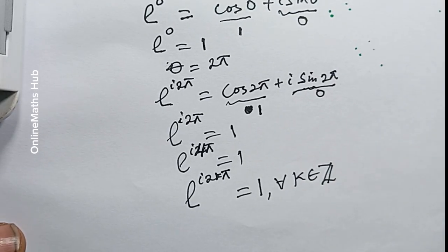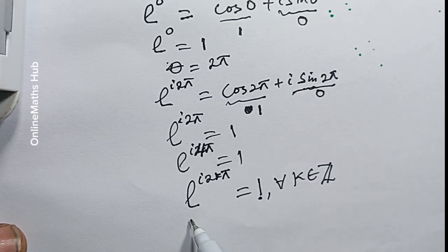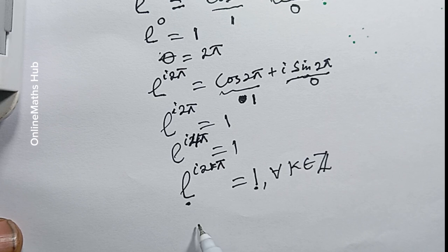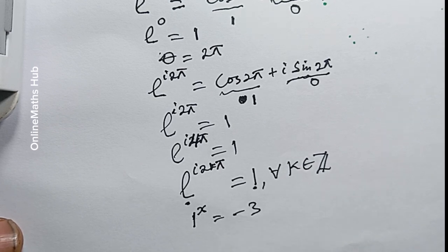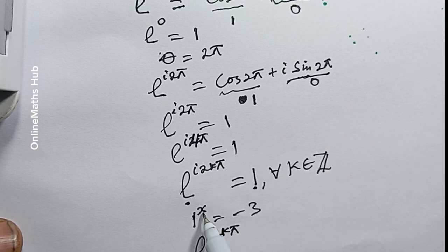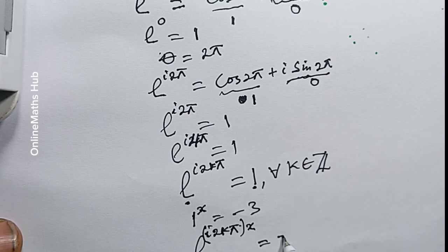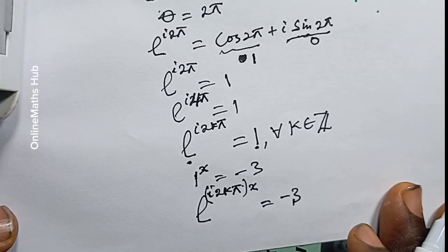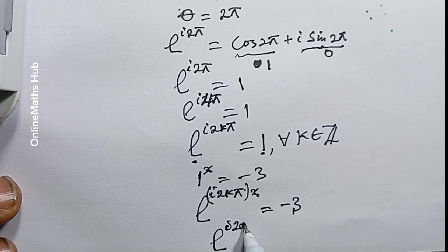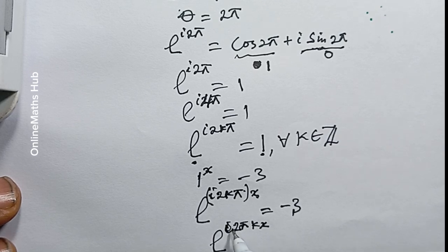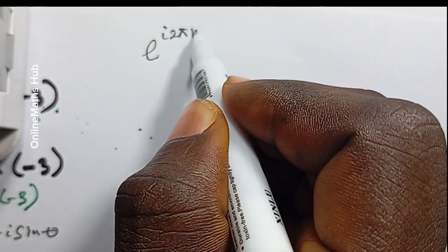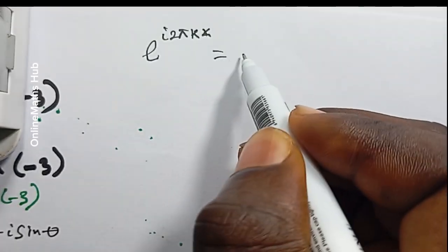From here we can make the substitution: whenever we see 1, we replace it with e^(i·2kπ). So the original equation 1^x = -3 becomes (e^(i·2kπ))^x = -3. Multiplying x into the exponent, this becomes e^(i·2πkx) = -3.